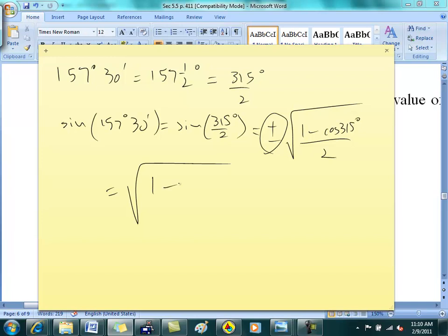Cosine 315. What quadrant is 315 in? 4. Cosine 315. What's cosine 45? Cosine positive or negative? Positive. So then it would be negative root 2 over 2 all over 2. Is everybody with me on this? So then this gives me square root of 2 minus root 2 over 4, which is square root of 2 minus root 2 over 2.